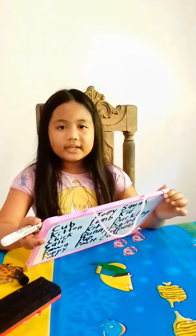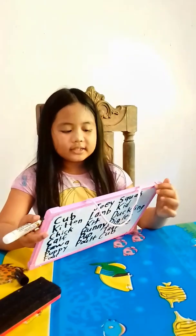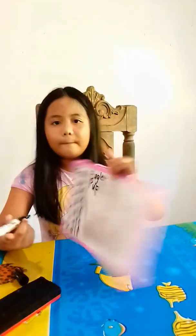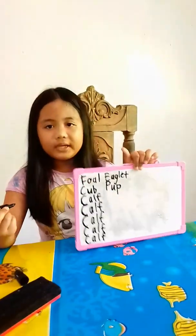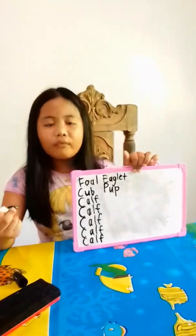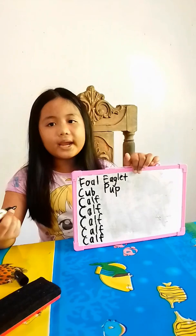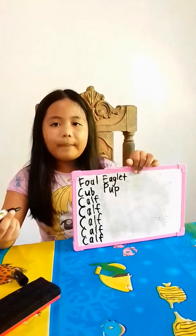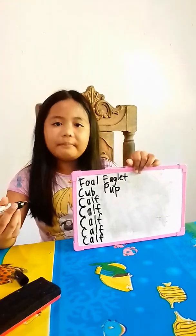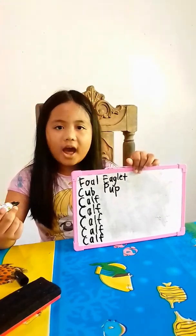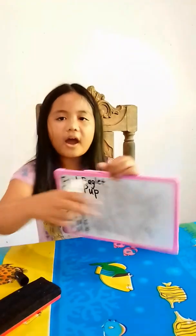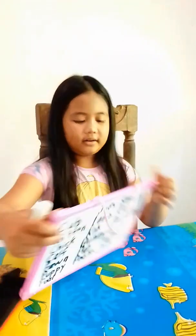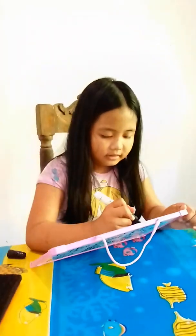What is the baby of a bee? The baby of a bee is a larva. Thank you.